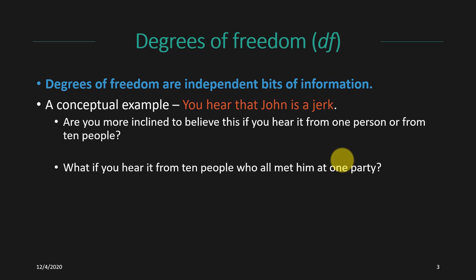Degrees of freedom can be thought of as independent bits of information. As a conceptual example, let's say you hear that some guy named John is a real jerk. Are you more inclined to believe that if you hear it from one person or from 10 people? If you hear it from 10 people it sounds more credible, because 10 people have independently confirmed that they all think John is a jerk, which seems like a fairly stable characteristic of who John is.